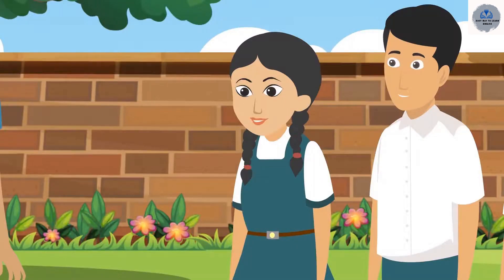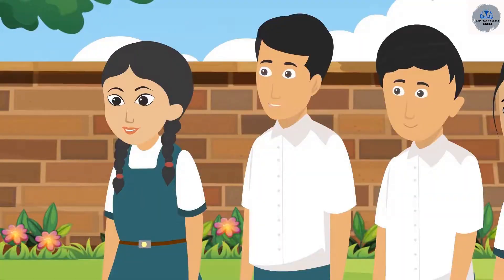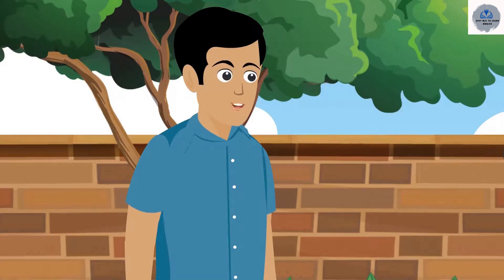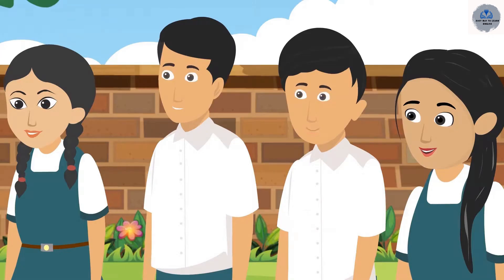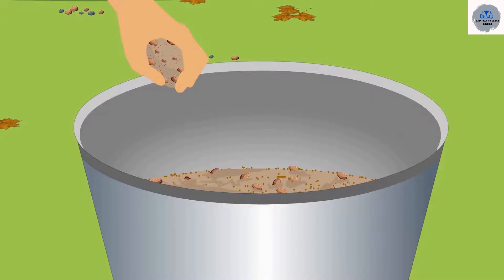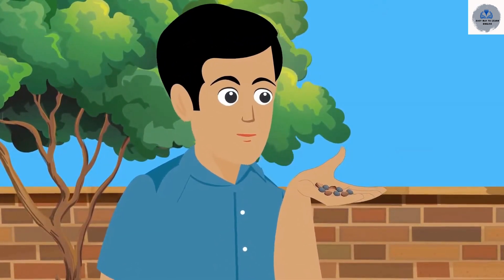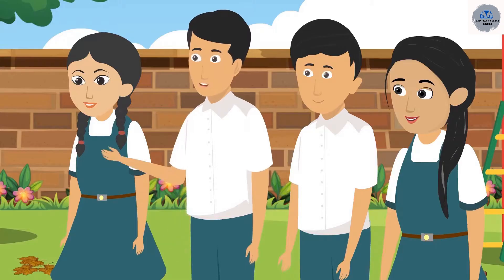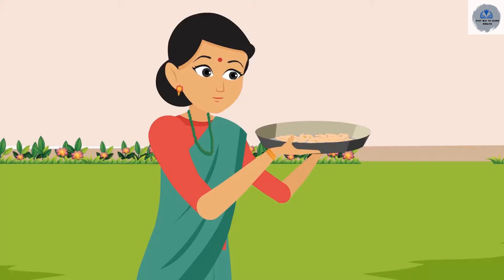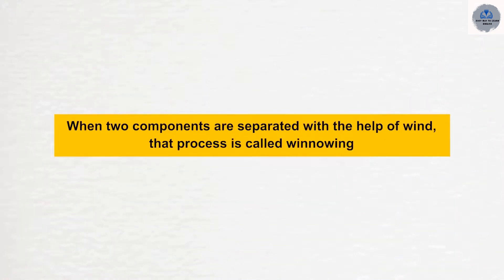We separate the impurities from the flour by sieving before making chapati. I have also seen a large sieve at the construction site — it helps separate the pebbles from the sand. Separation of substances is done by many such processes. Threshing and sedimentation are also used to separate substances. Rohit Bhaiya pulled out some pebbles from the tub in his fist. Along with the pebbles, some sand also came into his hand. He opened his fist, blew on his hand, and all the sand flew away while the pebbles remained. This process is called winnowing — when two components are separated with the help of wind.